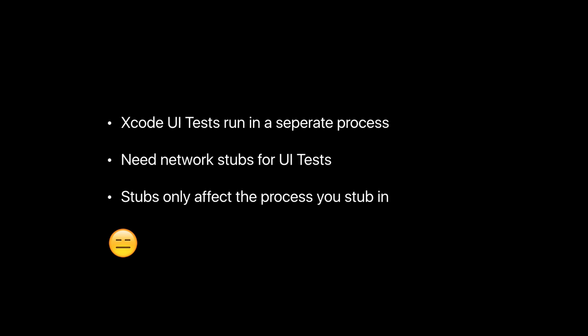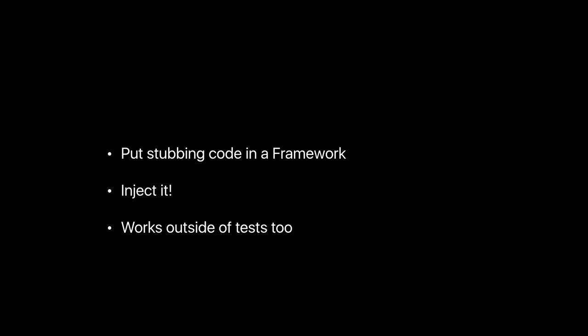Configuration and a framework. If you've done Xcode UI testing, you might have noticed it runs in a separate process. If you have network requests going in your application, you need to stub those — but only when running a UI test. If you use something like OHHTTPStubs to stub network requests within your UI tests, that only stubs requests coming from your UI tests — it doesn't actually stub them in your app. So there's this two-process thing going on, which can be quite annoying. If you put stub code in a framework, you can inject that framework into your application. And bonus — it works outside of tests too, so you can create a scheme that has all these stubs enabled when you're running.